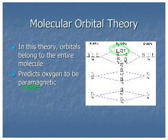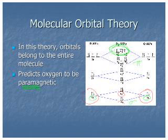You should know that when S orbitals overlap, you get a sigma bond, which is an end-to-end overlap. And when P orbitals overlap in a side-to-side overlap, you get pi bonds. Also, if I overlap two orbitals — for example, the 1s orbital from one oxygen atom and the 1s orbital from the other — I get two orbitals out of it.